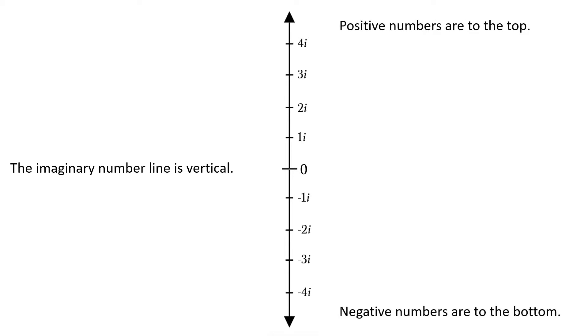Now the imaginary number line however is vertical. Positive numbers to the top, negative numbers to the bottom. Notice that the basic units, instead of counting 1, 2, 3, 4, we go 1i, 2i, 3i, 4i, etc.